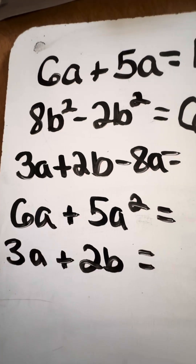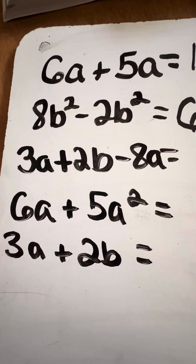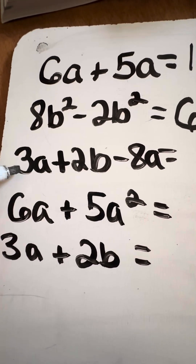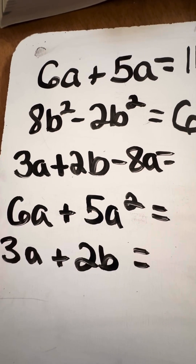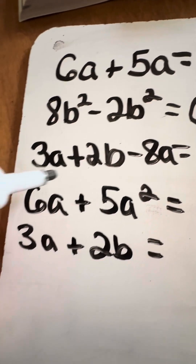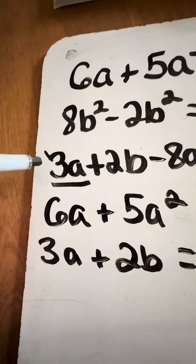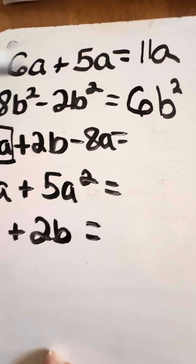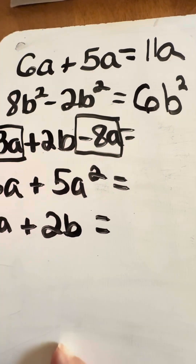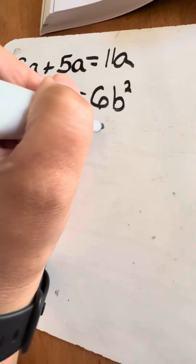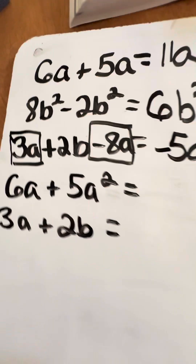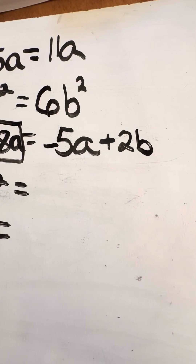Now we take a look at the next one. We have a trinomial because there are 3 terms: there's 3a, there's 2b, and then minus 8a. We cannot combine the b's with the a's because they're not the same thing. However, I can combine the 3a's with the 8a's at the end. So we do 3 minus 8, which gives us negative 5. So we have negative 5a. Because there's nothing else to combine the 2b's with, we leave that — it would be plus 2b. That's the finalized combining of like terms for this one.